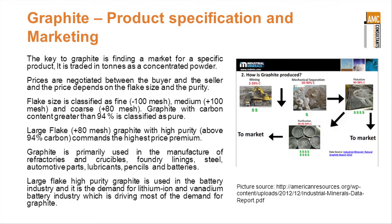It's traded in tons as concentrated powder. The large high purity flake graphite is used in the battery industry, and it's in demand for lithium-ion and vanadium batteries, which are driving most of the demand for graphite. It's also used in electrodes in a large number of applications and used for producing crucibles for refractory material in boundary linings, et cetera — so a wide variety of uses.